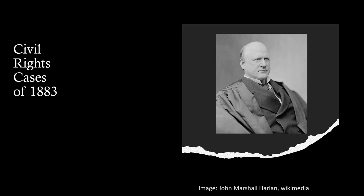John Marshall Harlan, pictured on the right, was the lone dissenter in the case. His dissent was based on the belief that Congress had broad powers, as established by John Marshall in the early republic — his namesake. He pointed to the public function that these private places of accommodation serve.